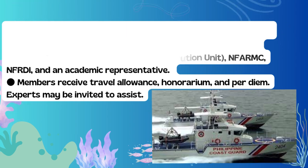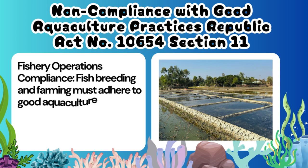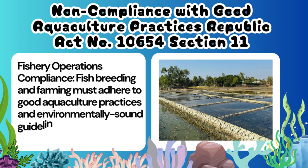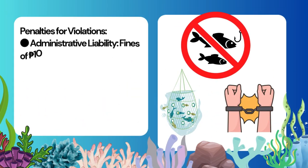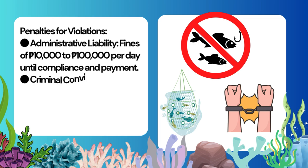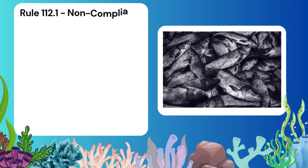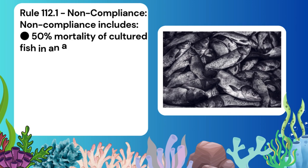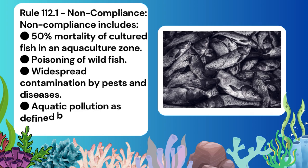Non-compliance with Good Aquaculture Practices — Republic Act No. 10654, Section 11 — Fishery Operations Compliance: Fish breeding and farming must adhere to good aquaculture practices and environmentally sound guidelines set by the department. Penalties for violations — Administrative liability: Fines of 10,000 to 100,000 Philippine Pesos per day until compliance and payment. Criminal conviction: Imprisonment for three years and fines double the administrative amount. Rule 112.1 — Non-compliance includes 50% mortality of cultured fish in an aquaculture zone, poisoning of wild fish, widespread contamination by pests and diseases, and aquatic pollution as defined by the code.